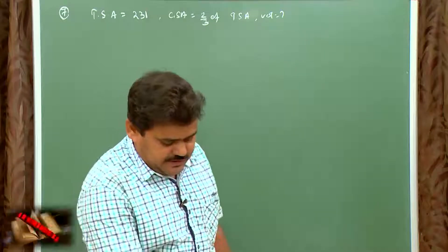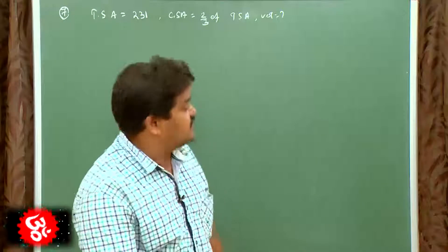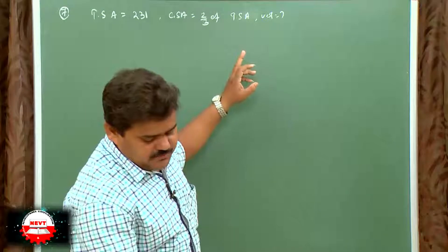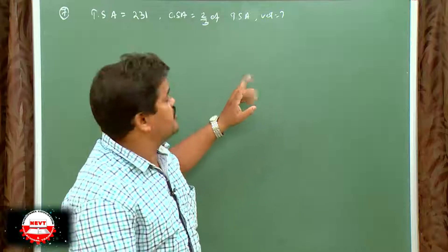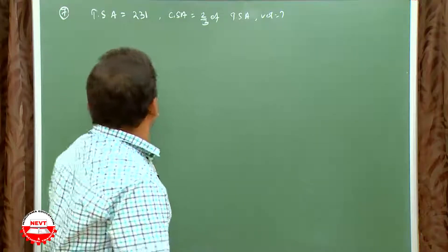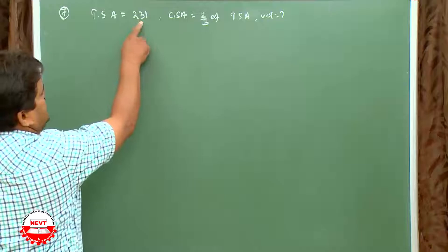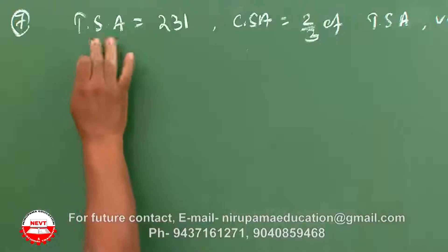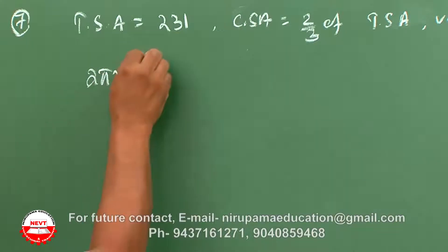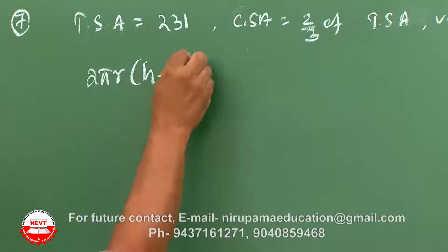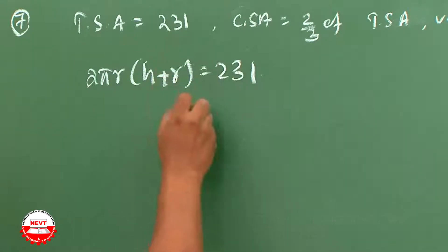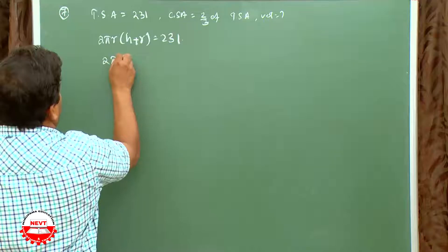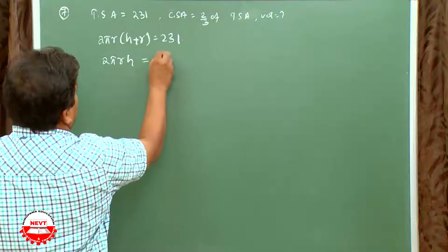Next question: a solid cylinder has total surface area 231. The curved surface area is two-thirds of the total surface area. Find the volume of the cylinder. Total surface area: 2πr(h + r) = 231. Curved surface area: 2πrh = (2/3) of total surface area.